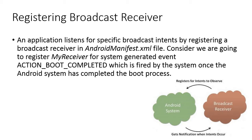Next, we have Registering the Broadcast Receiver. An application will listen for specific broadcast intents by registering a broadcast receiver in the AndroidManifest.xml file. Once you have created your broadcast receiver class, you need to register it in your AndroidManifest.xml file so the system knows it exists.